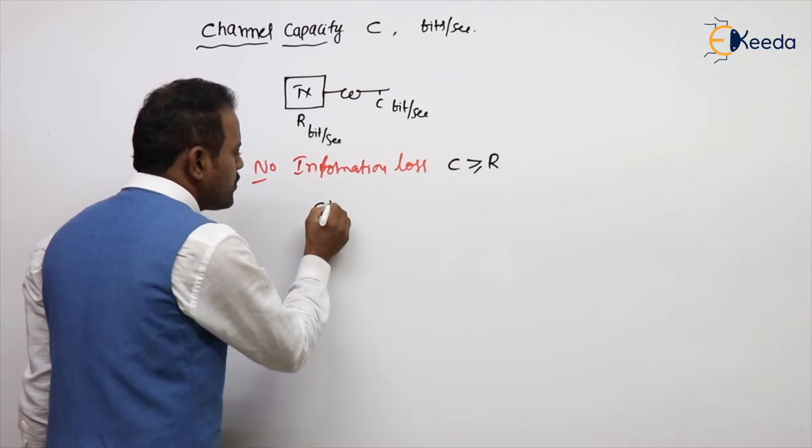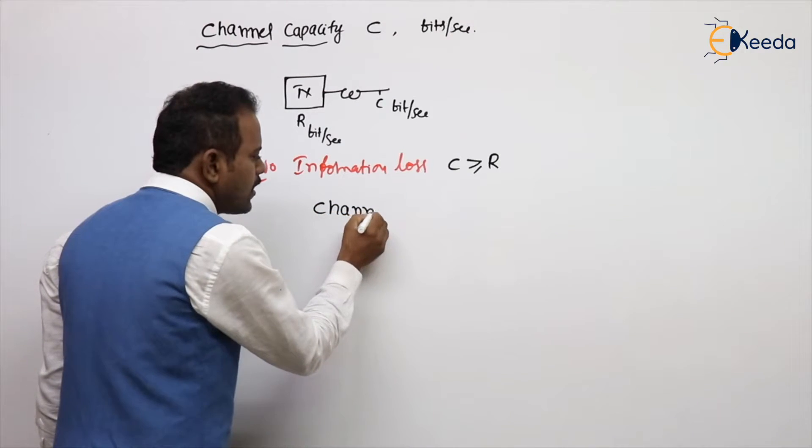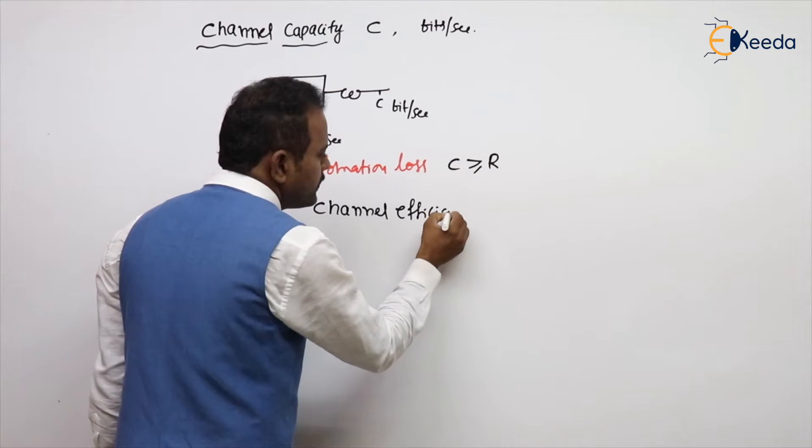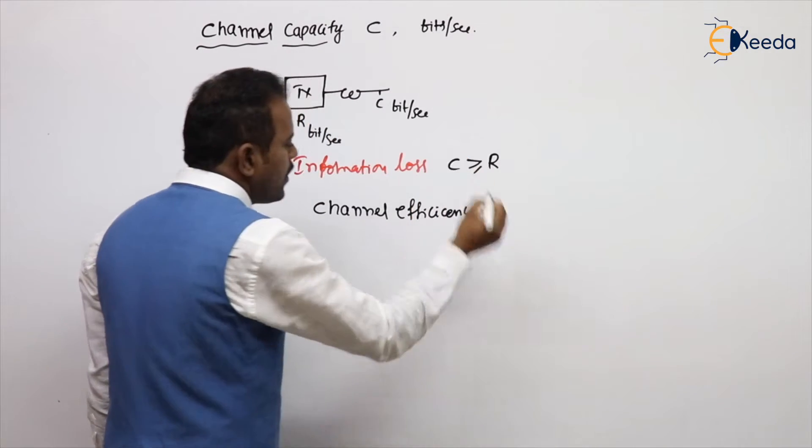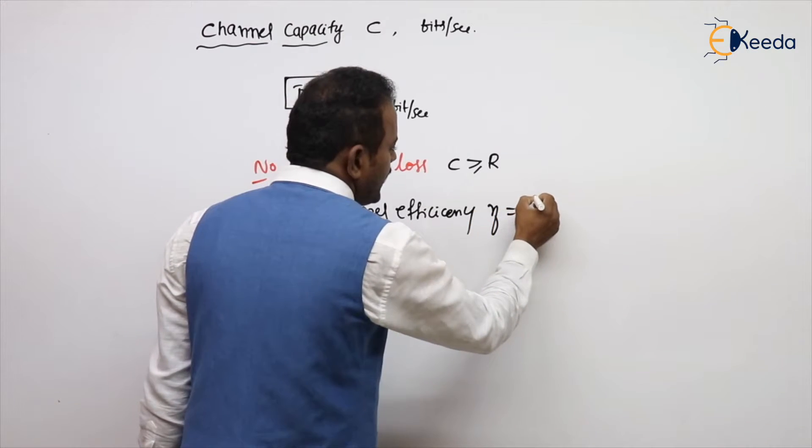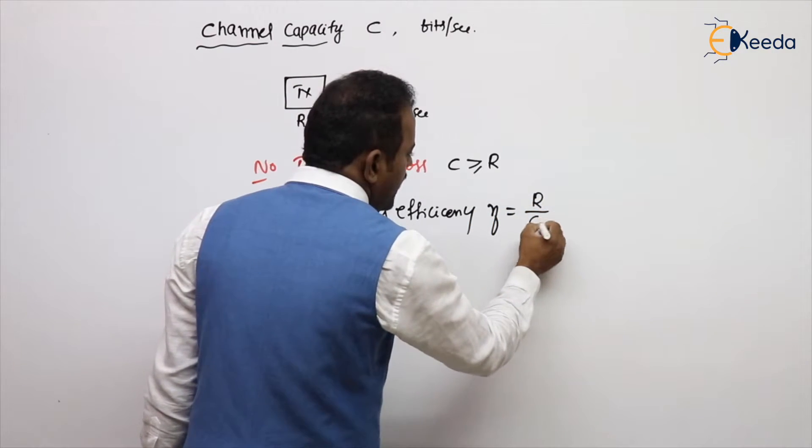Now, here we can also bring another point called channel efficiency. What is channel efficiency? It is denoted with eta. Eta is nothing but R by C.